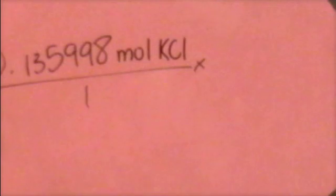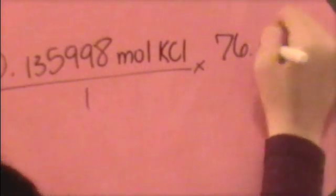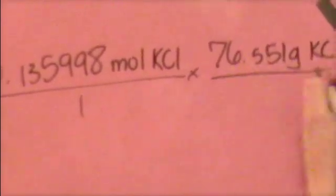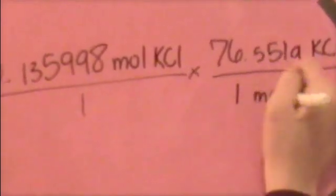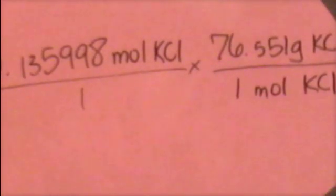To find the number of grams of potassium chloride we're going to end up with, we need to multiply the moles of potassium chloride by potassium chloride's molar mass, which is 76.551 grams. And that is out of 1 mole of KCl. And you'll remember we find our molar mass by adding together the masses shown on the periodic table.